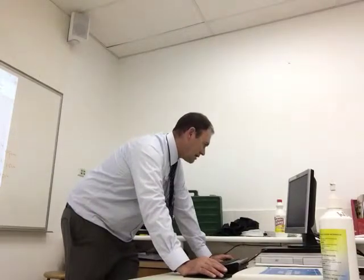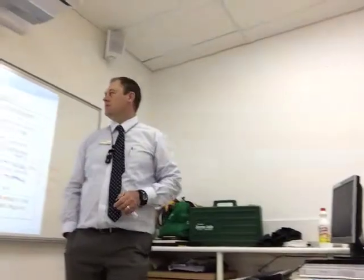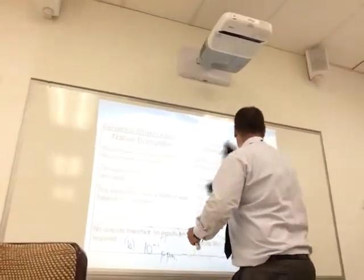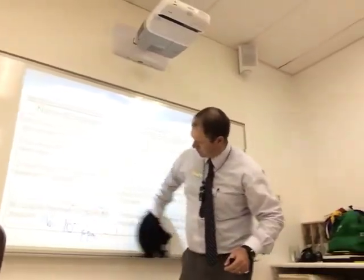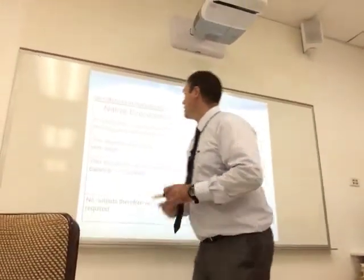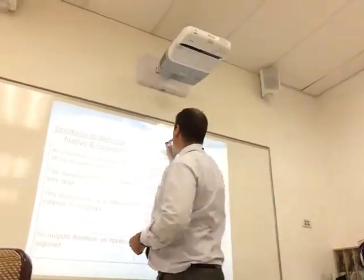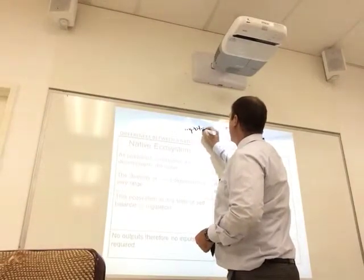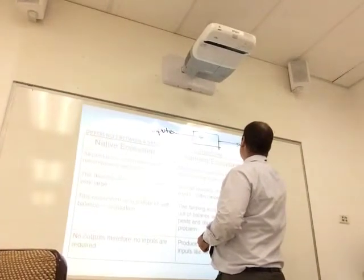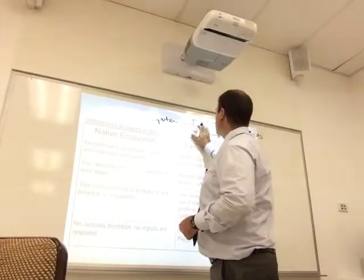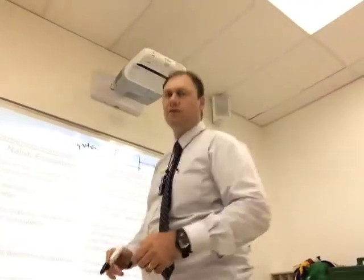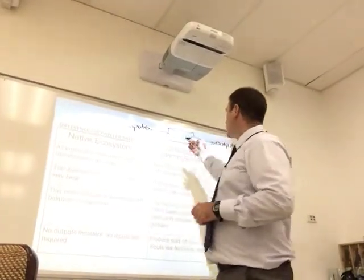I'll just take you back to the last lesson. You can see there we're looking at the difference between native and farmed ecosystems. What was the main difference that we have between these? So if we're looking at the farming ecosystem, quite often we talk about a black box model where we have inputs going into our system and then coming out we have outputs. And there are obviously processes that happen in between. So: black box model, inputs, processes, and then outputs.